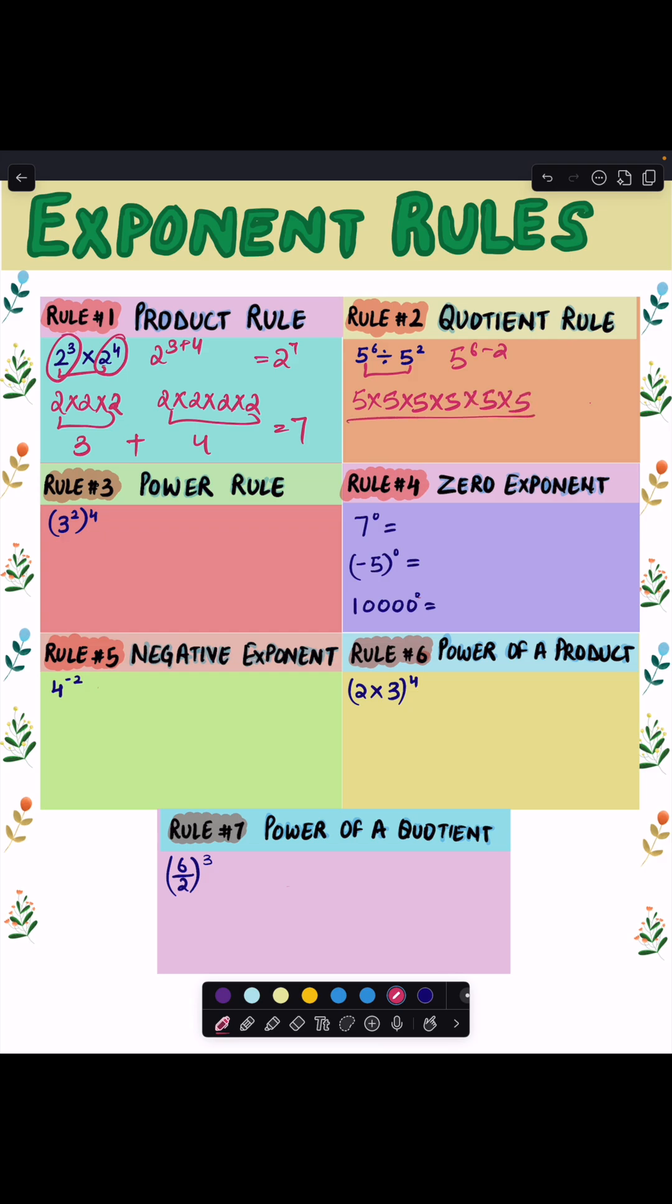We can write down 5 raised to power 6 like this, divided by 5 raised to power 2. We can cancel out these two 5s from the numerator and the denominator, and it leaves us with four 5s, which gives us